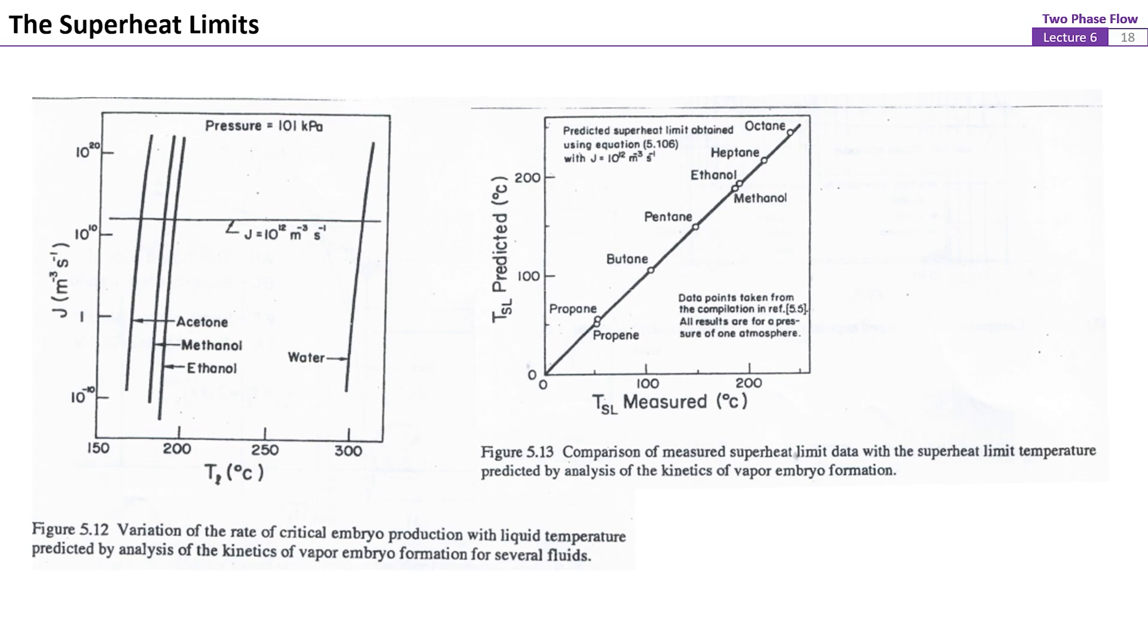However, as previously noted, the predicted superheat limit for water is about 300 degrees C at atmospheric pressure by using this model. This is significantly different from the value determined experimentally, which is between 250 and 280 degrees C.